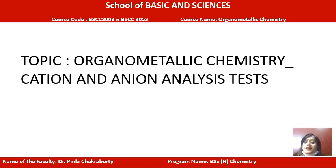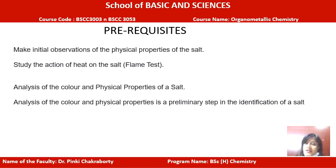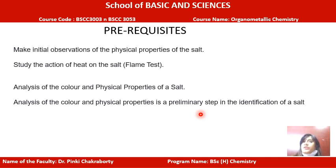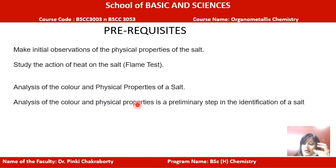Now, to extend the discussion of anions, this is the particular presentation. The prerequisites remain the same, because these four things are very important for anyone doing this type of qualitative analysis — to be capable of noting down observations. In salt analysis, the most important thing is your initial observation. Many times, just by looking at the salt, smelling the salt, or seeing its physical state, you can indicate the type of anion or cation that could be present.